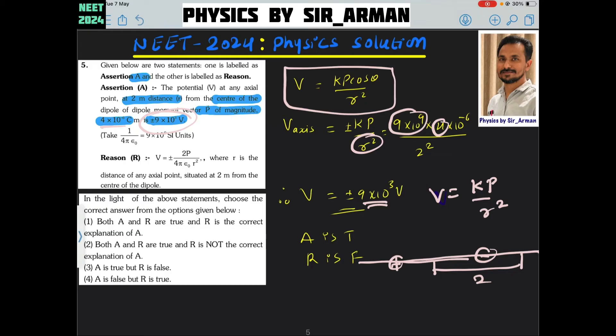Same here it is given 9000 volt. So the assertion is correct. Now, reason V equals to 2KP. If you rewrite this you will get 2 K P by R square. This is a wrong equation. This kind of equation is not there anywhere for this electric potential.